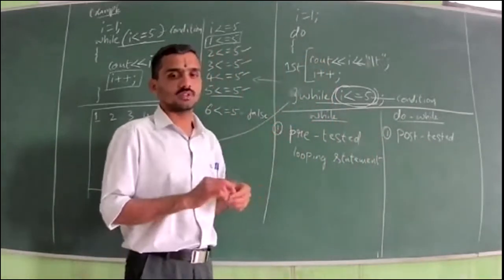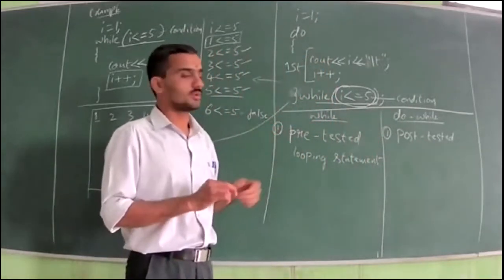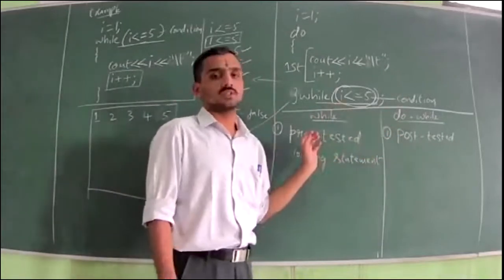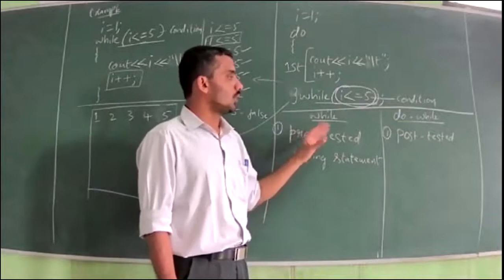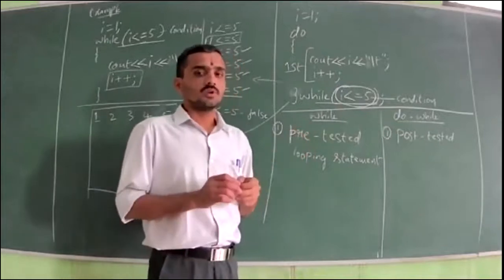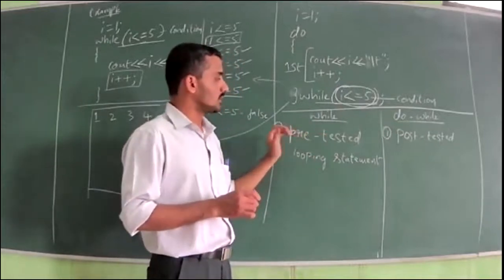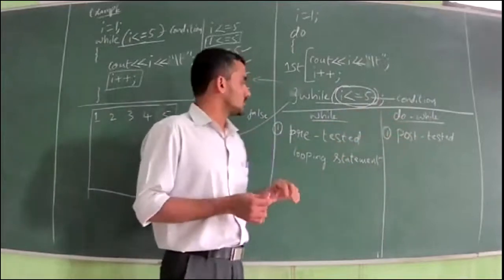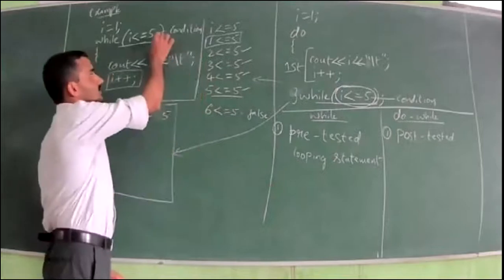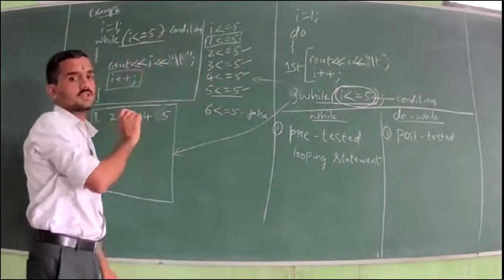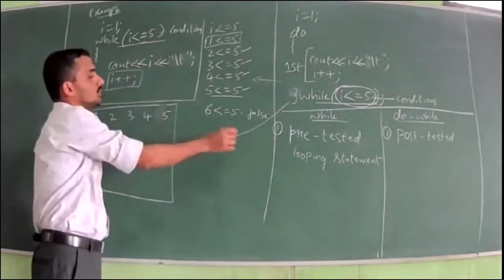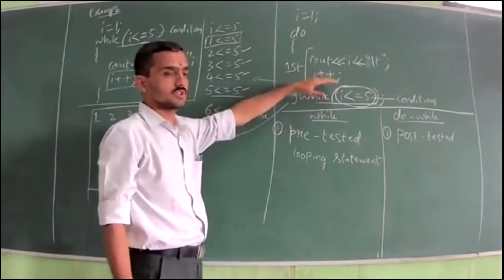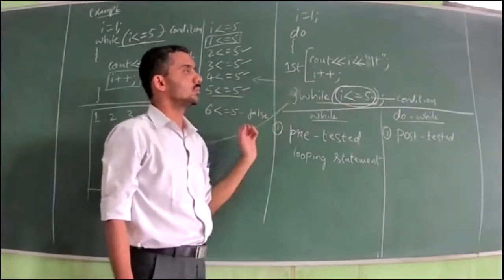Which loop is called as pre-tested looping statement? While loop. Which loop is called as post-tested looping statement? Do-while loop. While loop is called as pre-tested looping statement because condition is checked before the statements are executed. In case of do-while loop, condition is checked after the execution of statements, so it is called as post-tested looping statement.